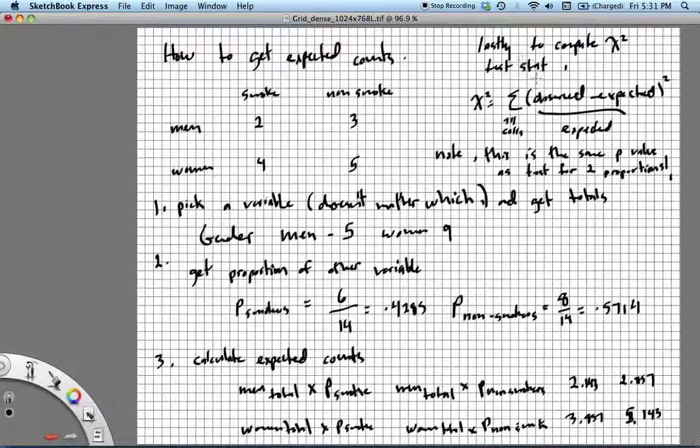So to actually do the chi-squared computation then, you're going to take your observed minus expected squared over the expected for each cell, and you're just going to add them up, and that's going to give you a statistic, and then you would consult a chi-squared table, or hopefully you have the software to use.